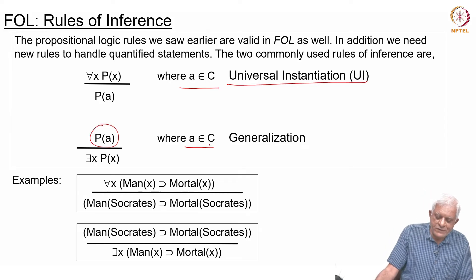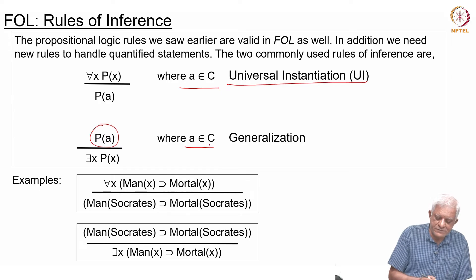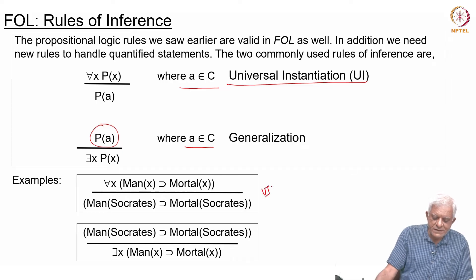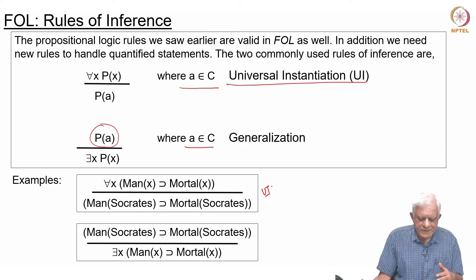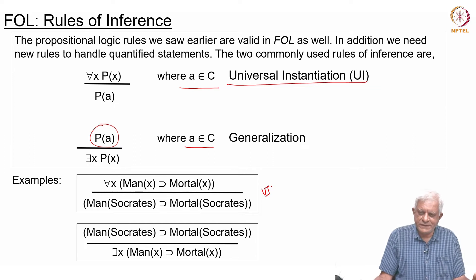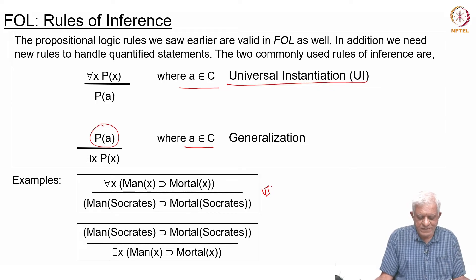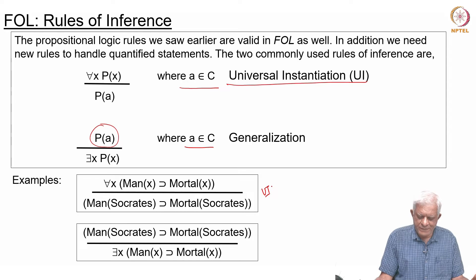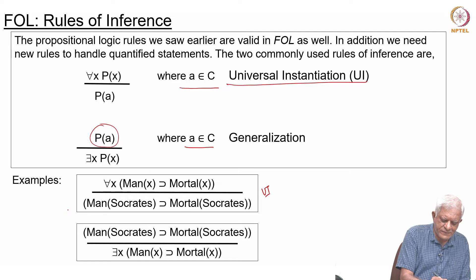One place, as you can guess, where we can use these two rules is when we are reasoning with sentences. This is the first rule, Universal Instantiation. We said that all men are mortal. How did we say that? We said that for all x, if x is a man then x is mortal. Now, we can take an instance of this sentence and we can say: if Socrates is a man, then Socrates is mortal.